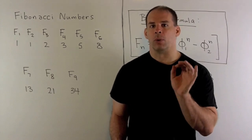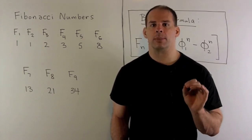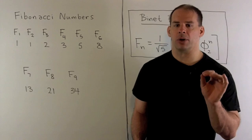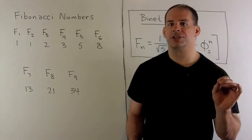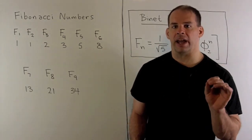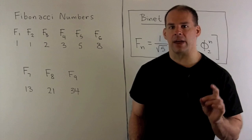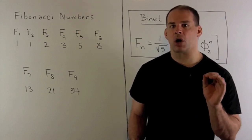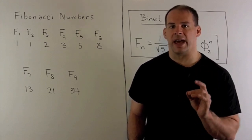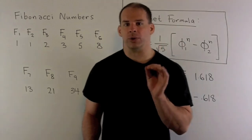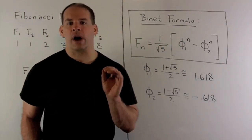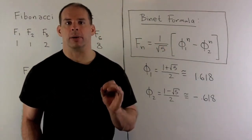If I wanted the 50th Fibonacci number, we'd have to compute the Fibonacci numbers from the 1st to the 49th, take the 48th and the 49th, and add them together. So that seems horribly inefficient. Instead, we can use the Binet formula, which will get us directly to the 50th Fibonacci number.